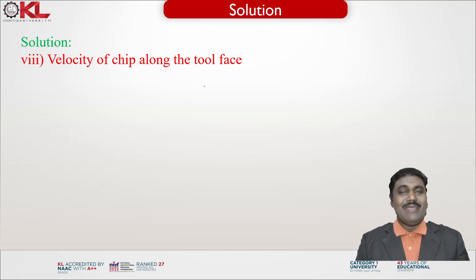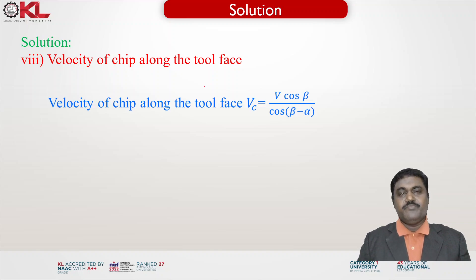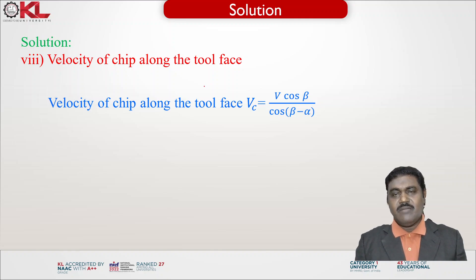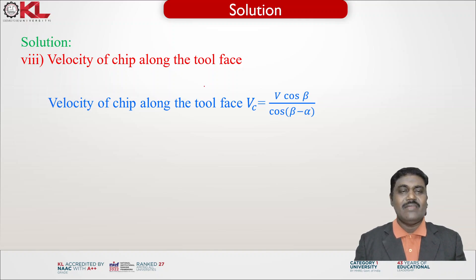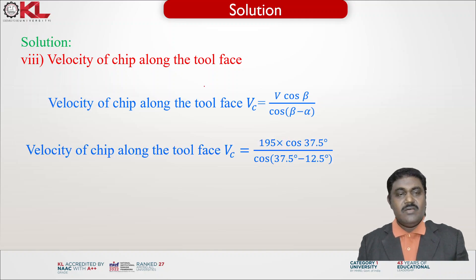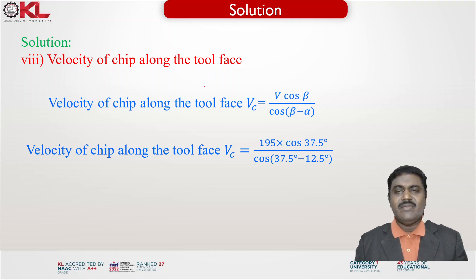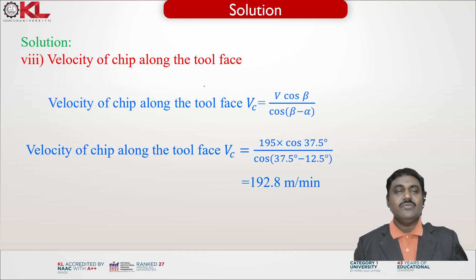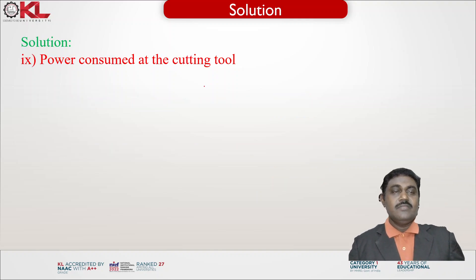For the eighth item, velocity of chip along the tool face: this is given by V × cos β / cos(β − α). Substituting V = 195 m/min, β = 37.5°, and (β − α) = 37.5° − 12.5° = 25°, the velocity of the chip along the tool face is obtained as 192.8 meters per minute.